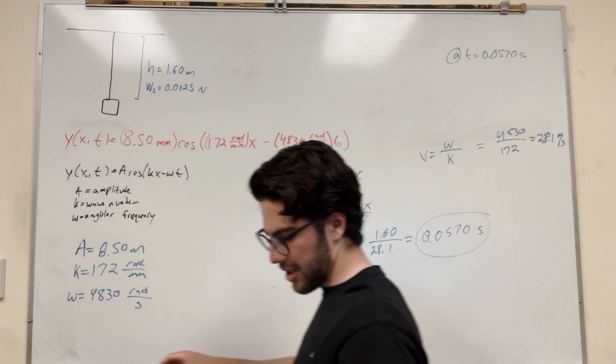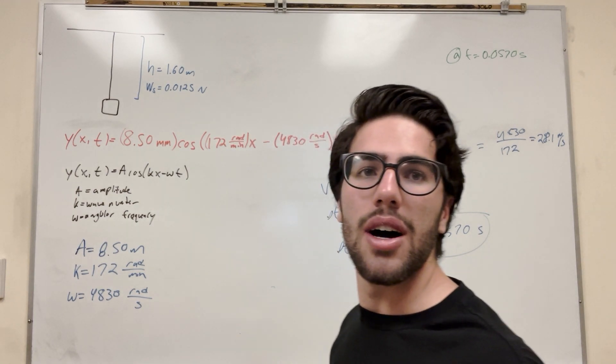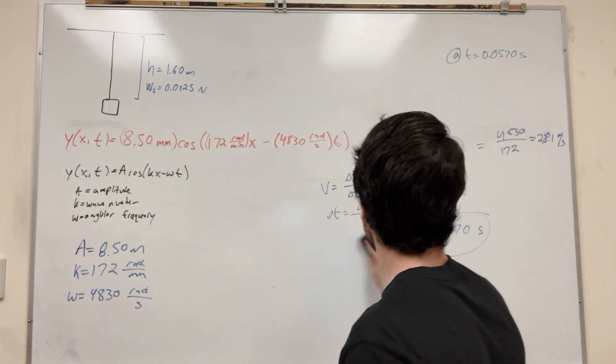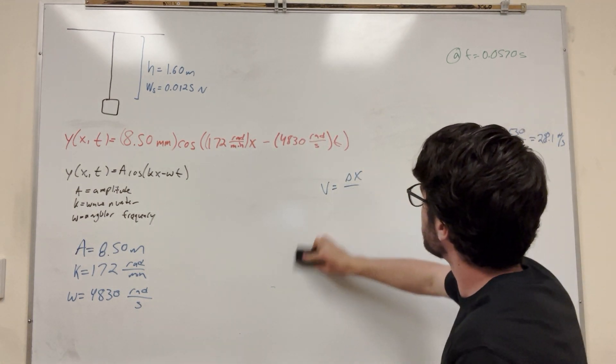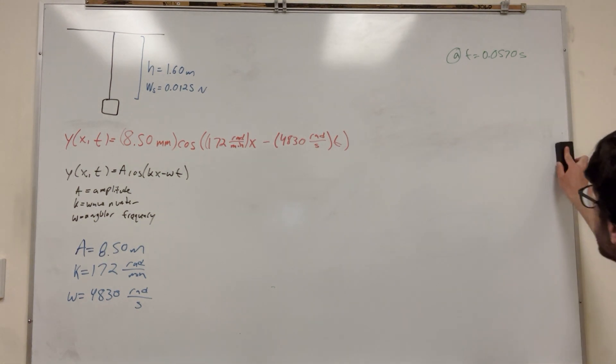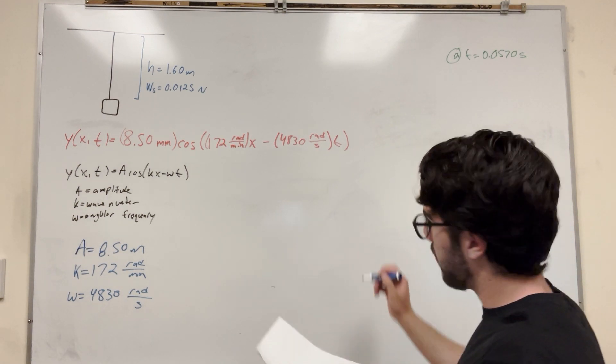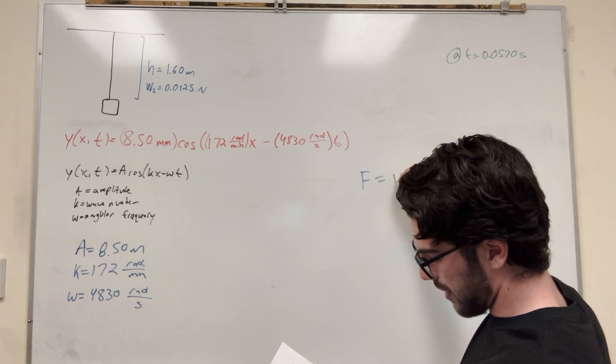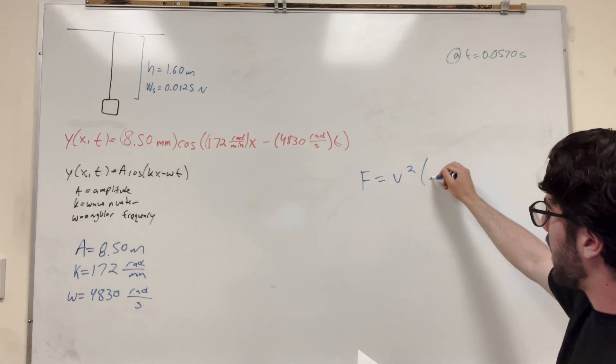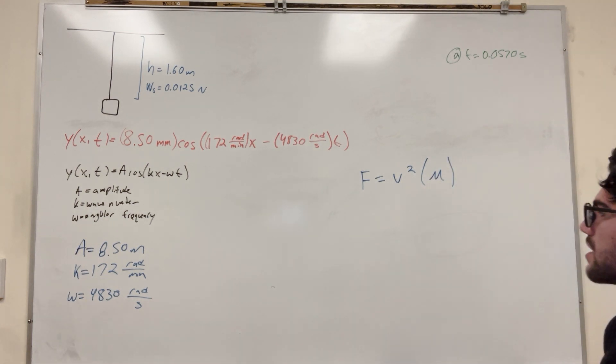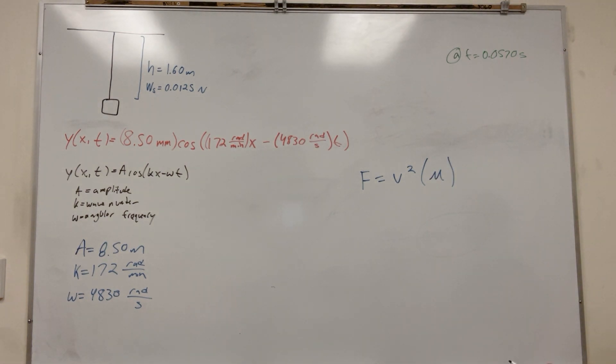Alright, part B. What is part B asking? What is the weight W? Yeah. So what is the weight of our mass? How are we going to do that? Alright, well, we got another equation we can use. So this equation is force is equal to velocity squared times the mass per unit length, which is this μ, or this U-looking thing.